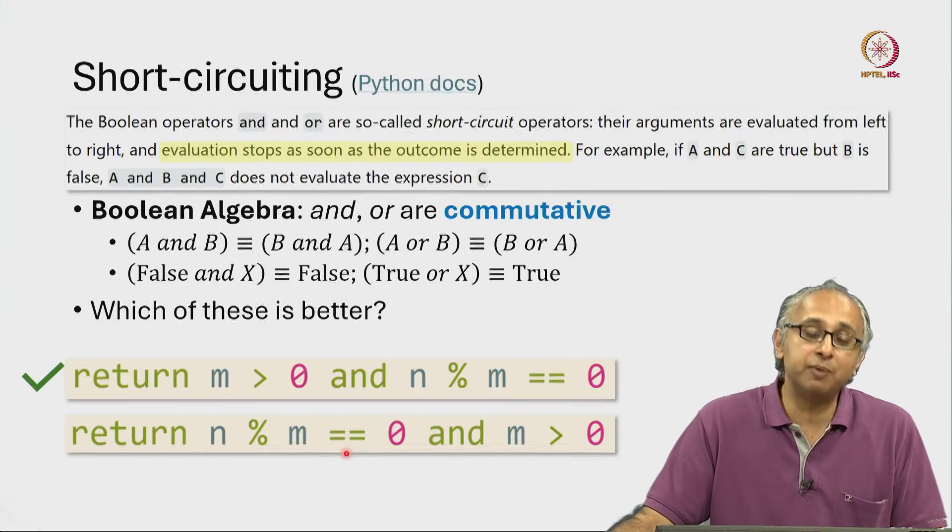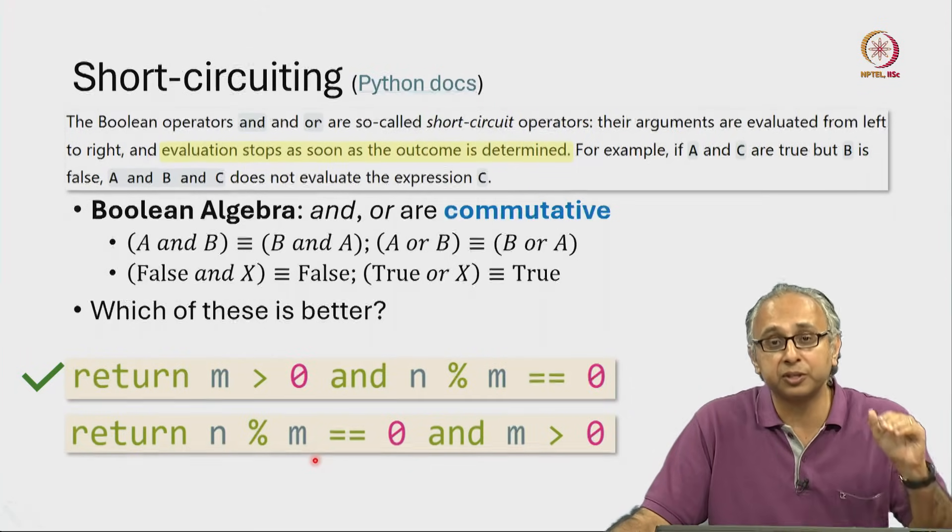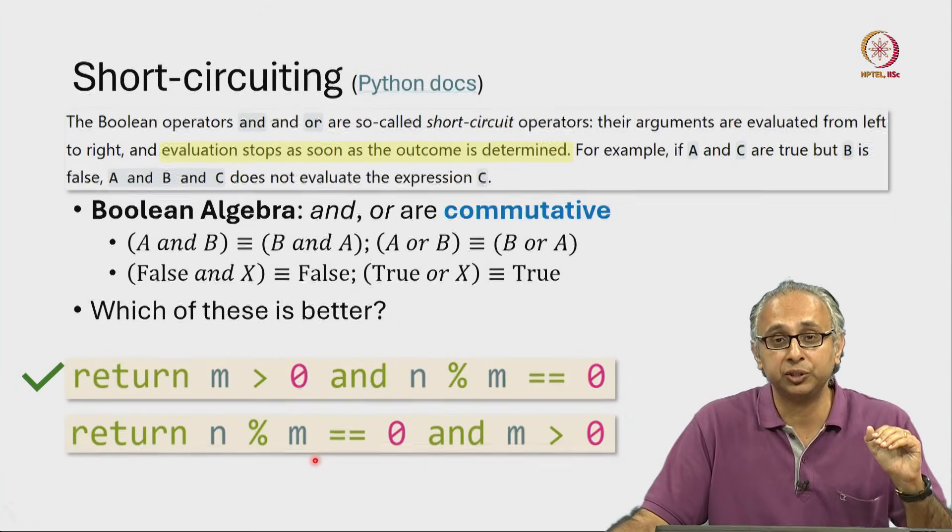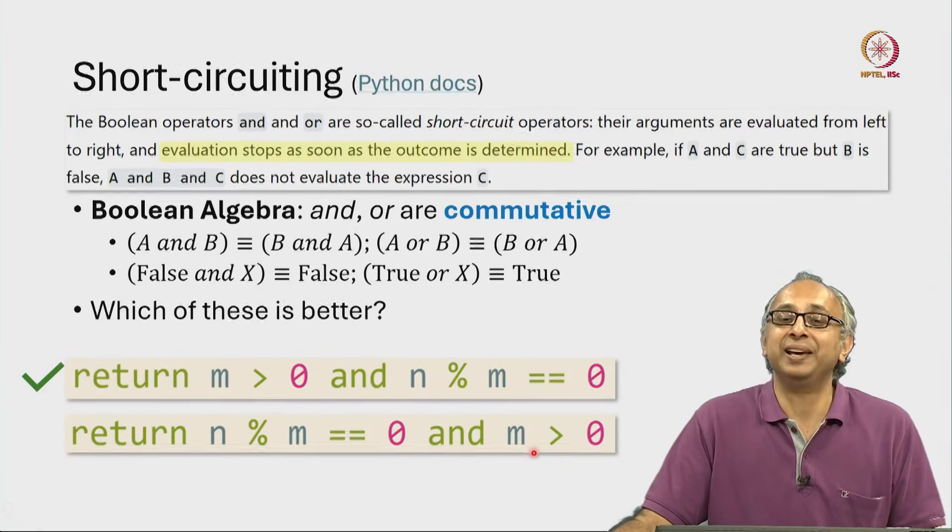In contrast, if m was zero and we hit this expression, we would do a divide by zero and this code would crash because of the division by zero, and this test comes too late.